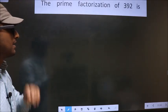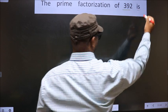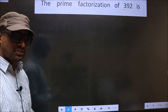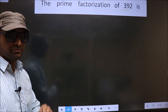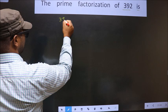The prime factorization of 392 is... To do the prime factorization, first we should frame it in this way. See, 392.